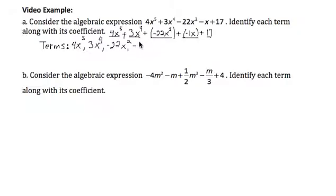Then negative, and I'm going to go ahead and put the 1 in front, even though we don't normally list when there's a 1. So I have 1, 2, 3, 4, 5 terms that make up this algebraic expression.